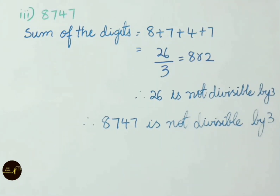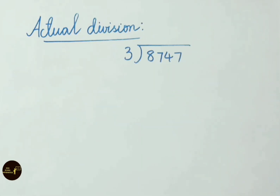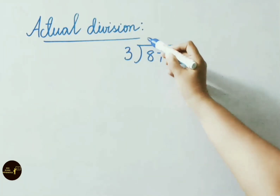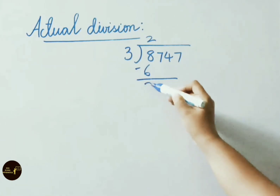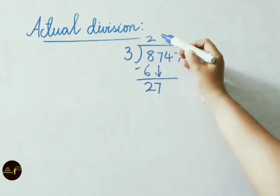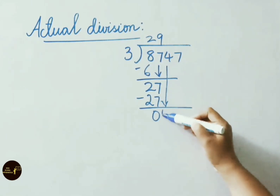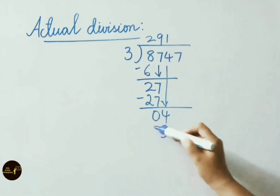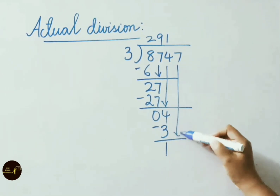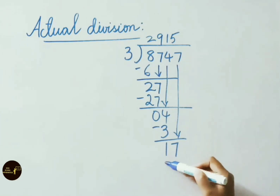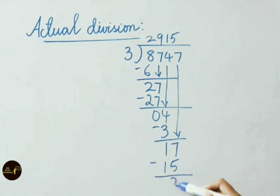Now let us verify this by doing the actual division. 8,747 divided by 3: 3 twos are 6, so 8 minus 6 is 2. Get down 7; 3 nines are 27, so 27 minus 27 is 0. Write down 4; 3 ones are 3, so 4 minus 3 is 1. Write down 7; 3 fives are 15, so 17 minus 15 leaves remainder 2. Therefore 8,747 is not divisible by 3.